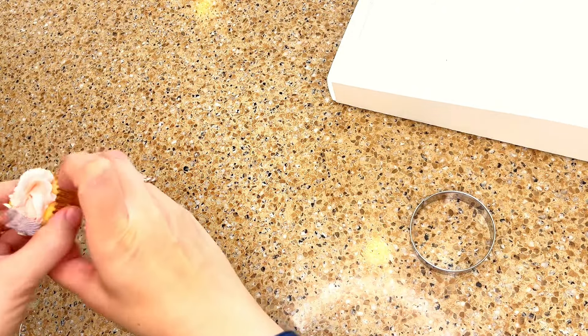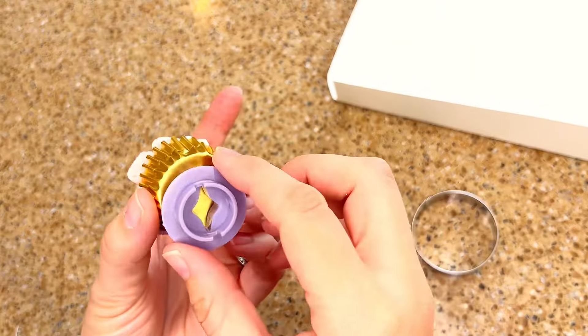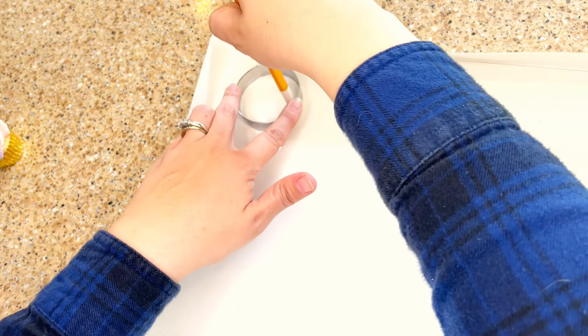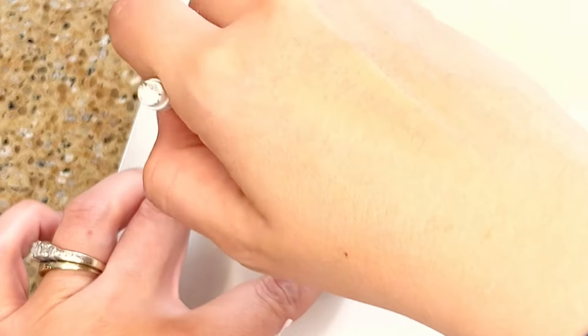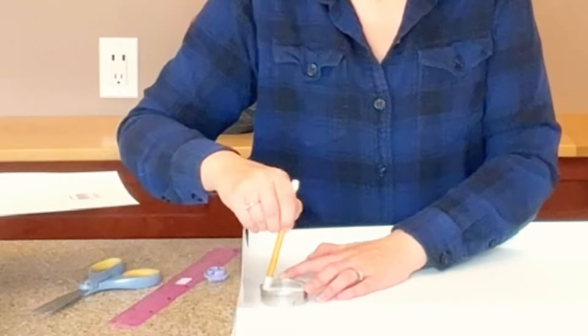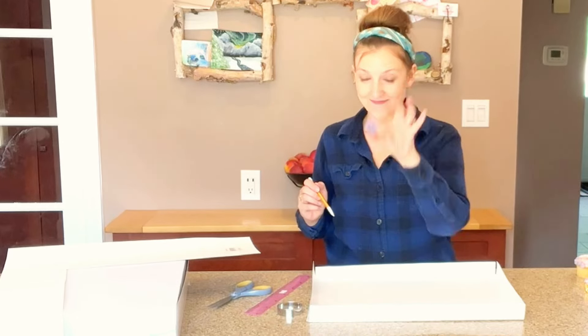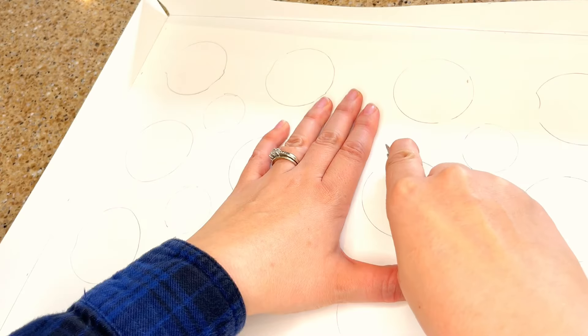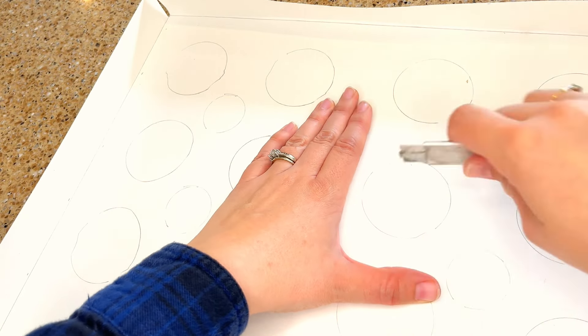I've made big and small cupcakes, so I'm going to need to trace two different size circles. Now on the bottom of my insert, I can take my circle and trace enough for each cupcake, making sure to leave enough space between each so that when my cupcakes are in they aren't going to touch each other.